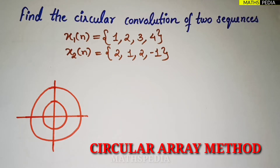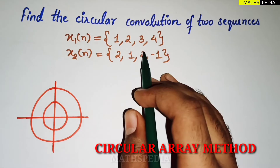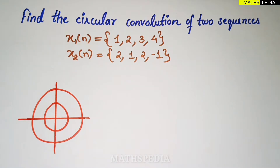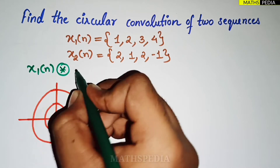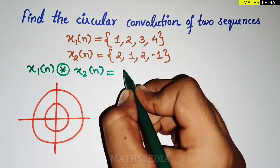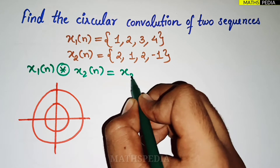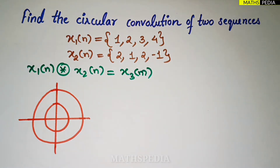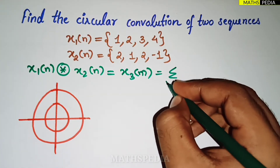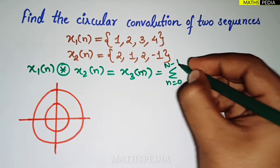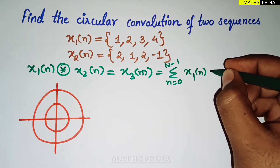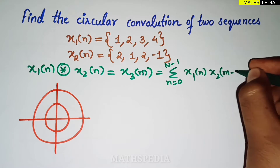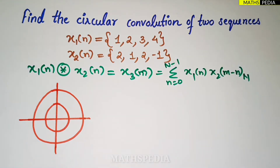In this video we'll solve one problem based on circular convolution. We need to find the circular convolution of two sequences. The formula is: x3(m) = summation from n=0 to N-1 of x1(n) into x2(m minus n). This is the formula for circular convolution.